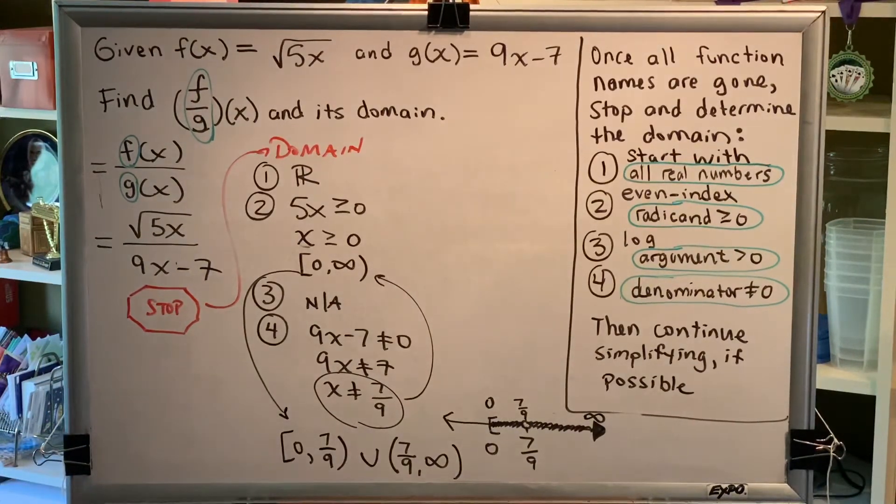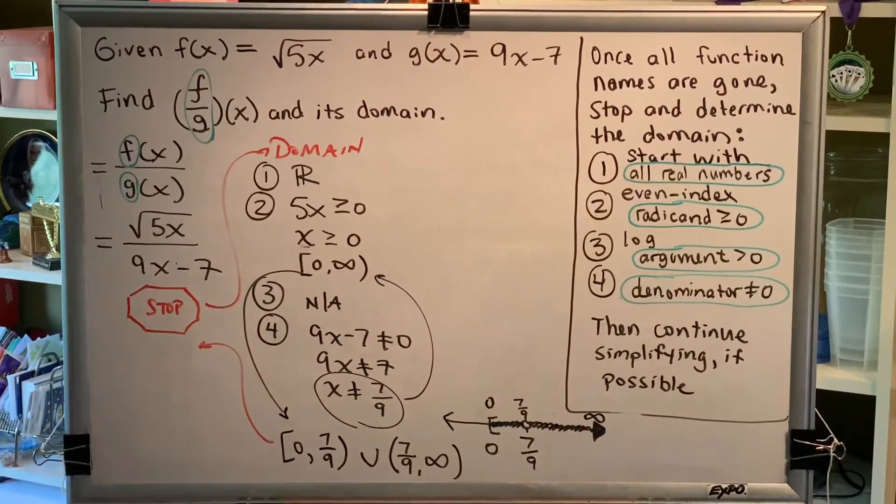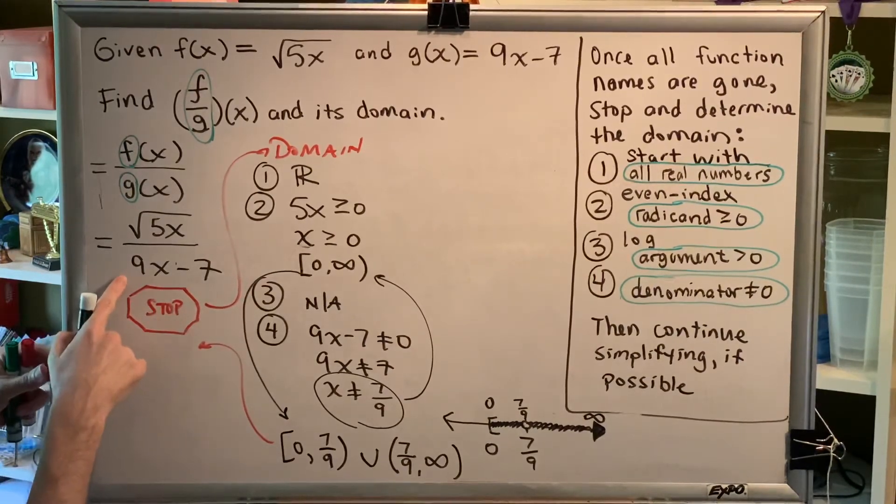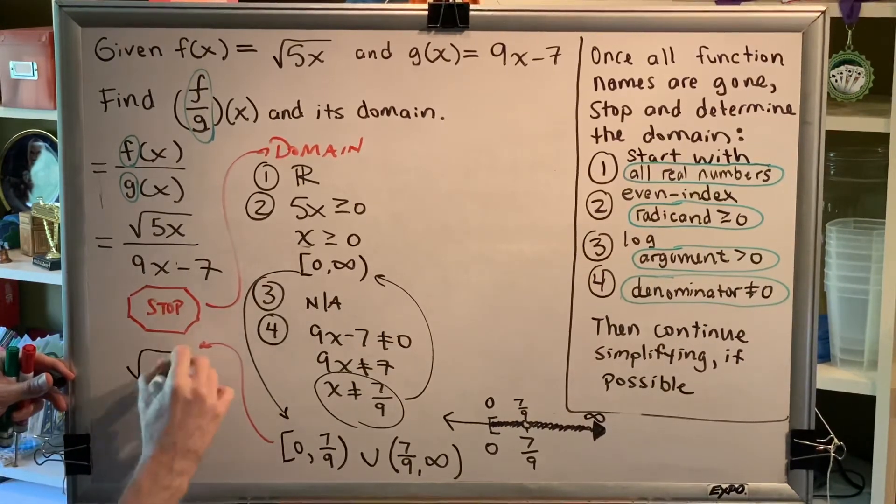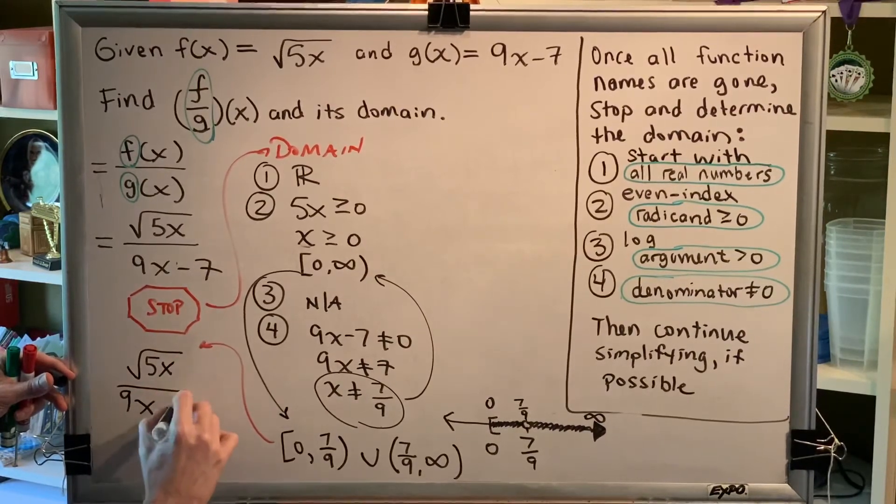Okay, so now we have all of the elements of our domain. We're now ready to go back and continue simplifying this problem if possible. So we look at what we have and we conclude there's nothing here that we can simplify. So our final answer is simply rewritten as what we had before.